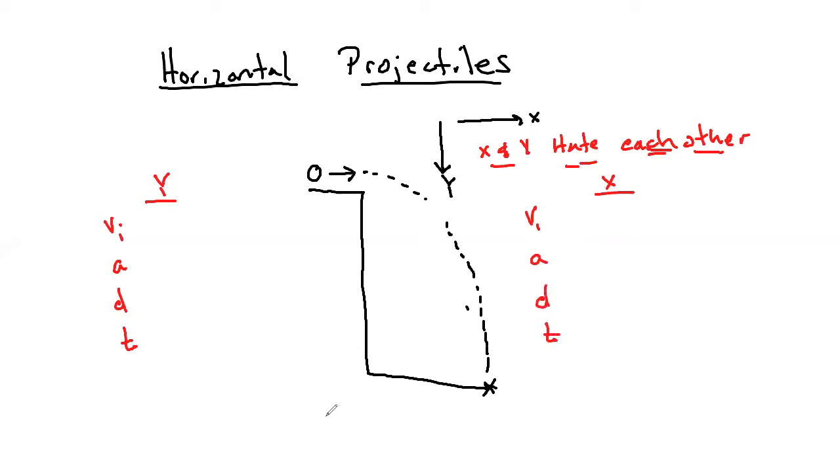We are going to have the same formula. So we're still going to have D equals VI T plus one half A T squared. And then we're also going to have our other motion formulas as well. Like VF equals VI plus A T and VF squared equals VI squared plus two A D. But the numbers that go into these formulas have to be taken from one or two sides.